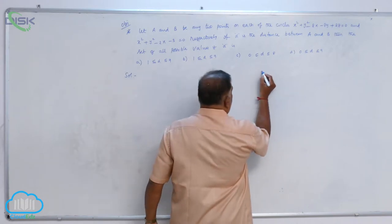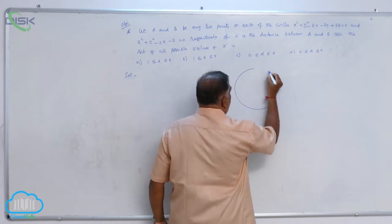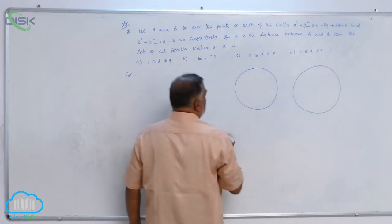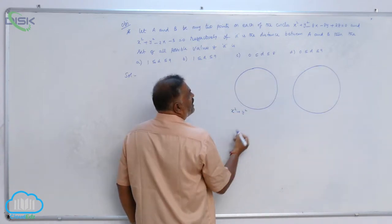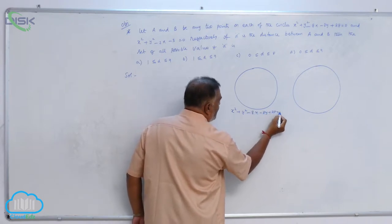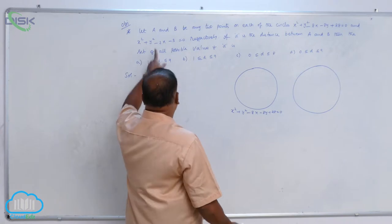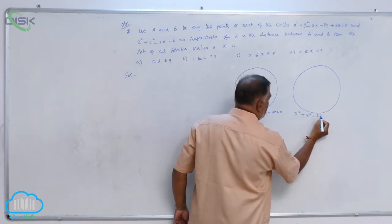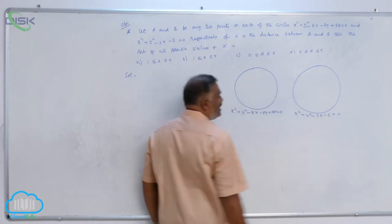Now, you can take circle number 1 like this, circle number 2 like this. You observe one point: x² + y² - 8x - 8y + 28 = 0. Second circle is x² + y² - 2x - 3 = 0.